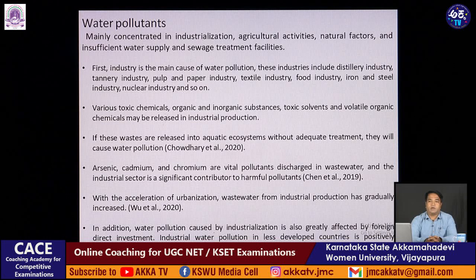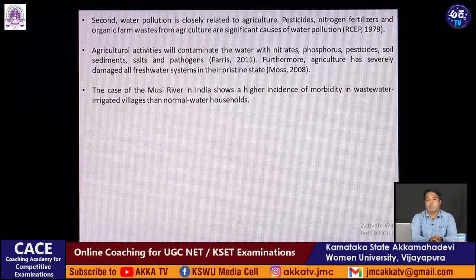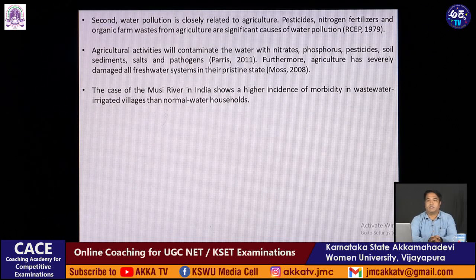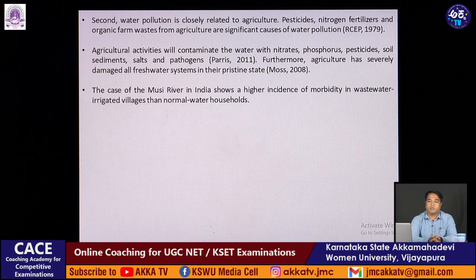With acceleration of urbanization, wastewater from industrial production has gradually increased. Water pollution can also be caused by agricultural outlets — pesticides, nitrogen fertilizers, and organic farm wastes from agriculture contribute to water pollution. Agricultural activities contaminate water with nitrates, sulphurs, pesticides, soil sediments, salts, and pathogens.